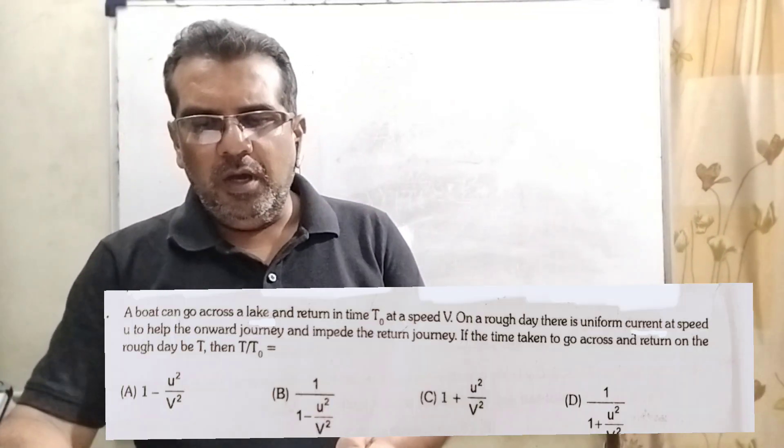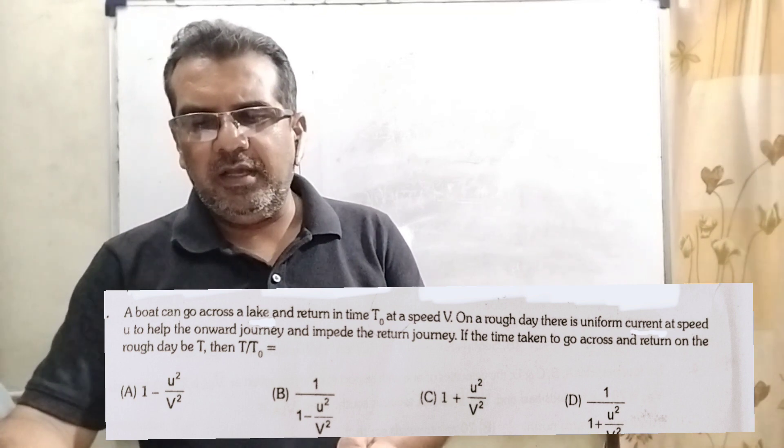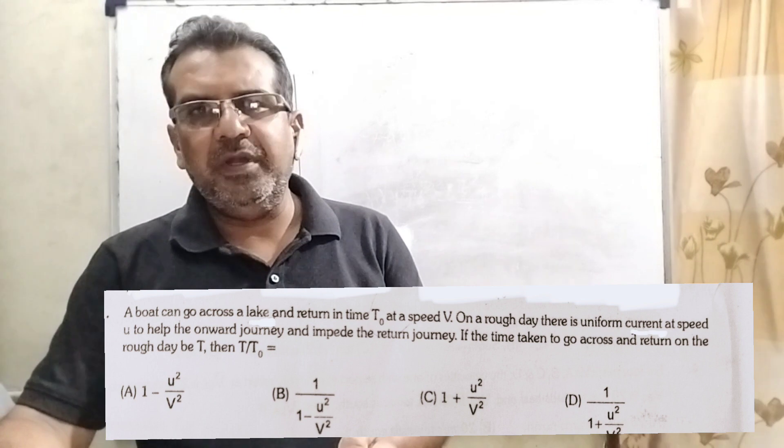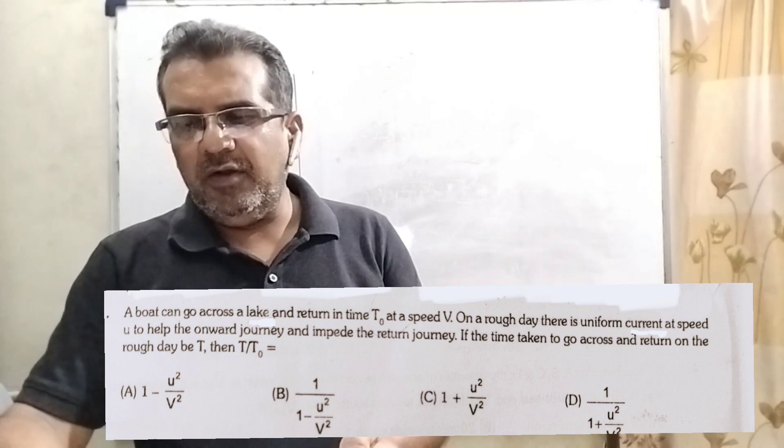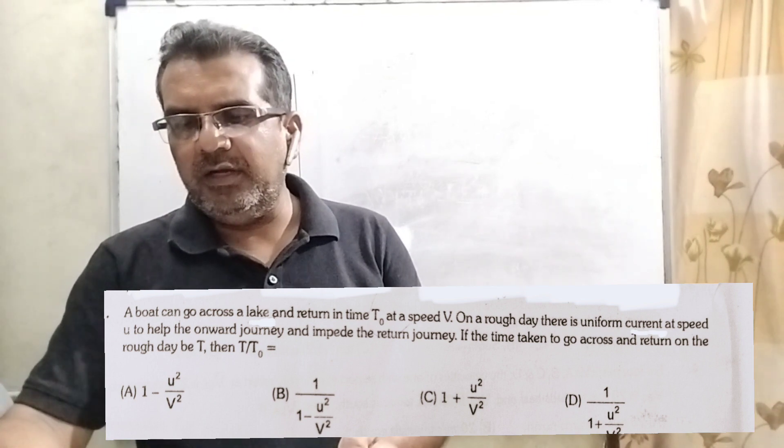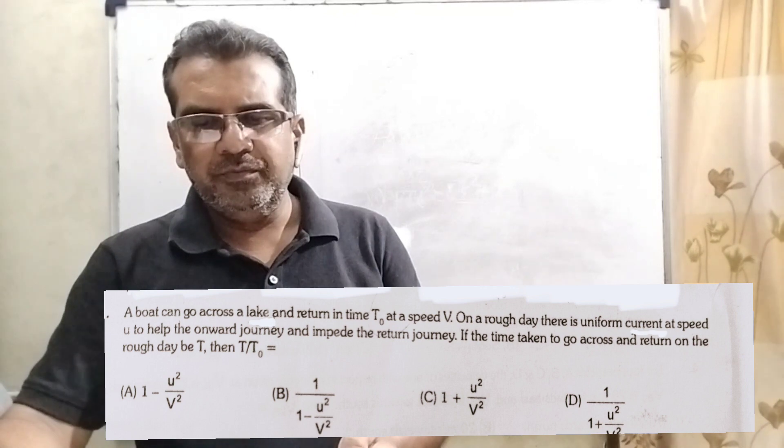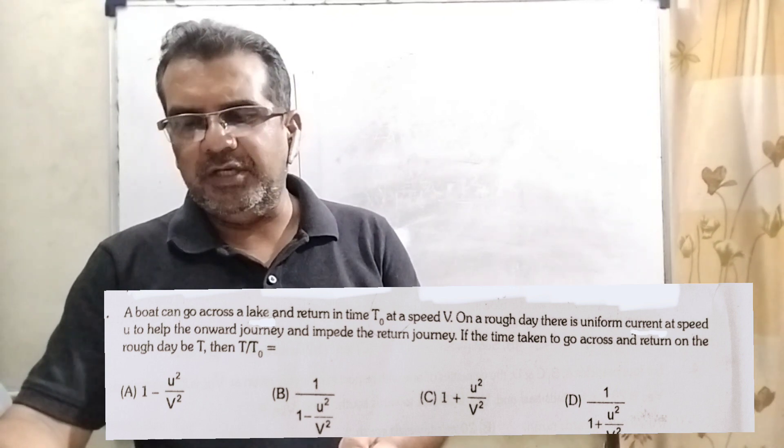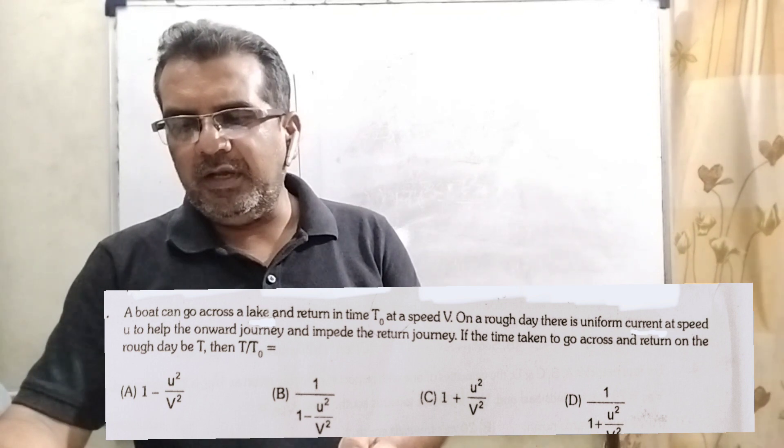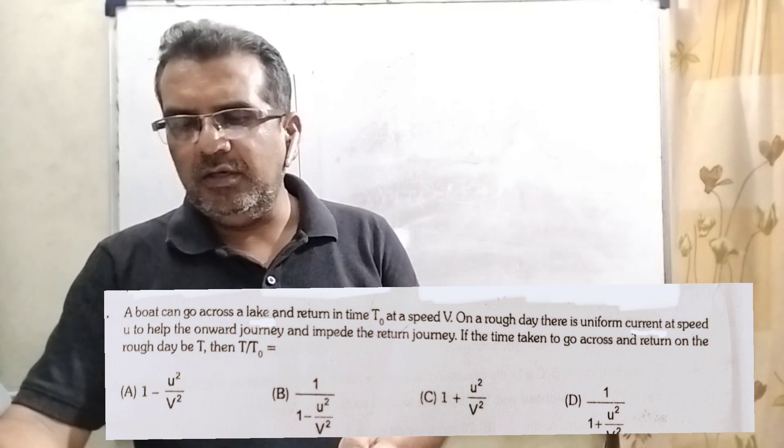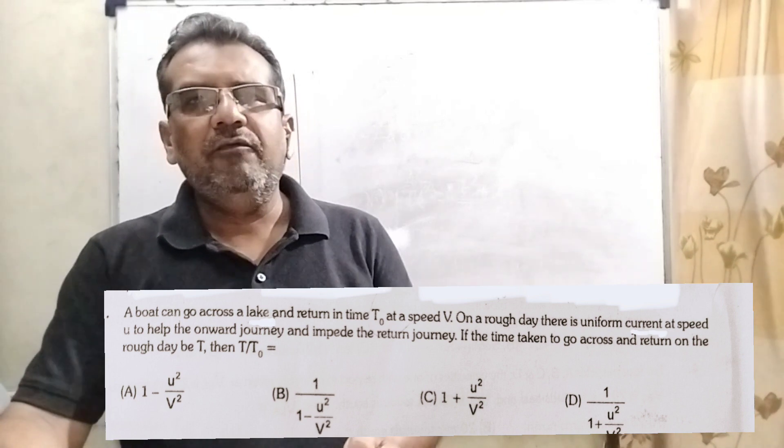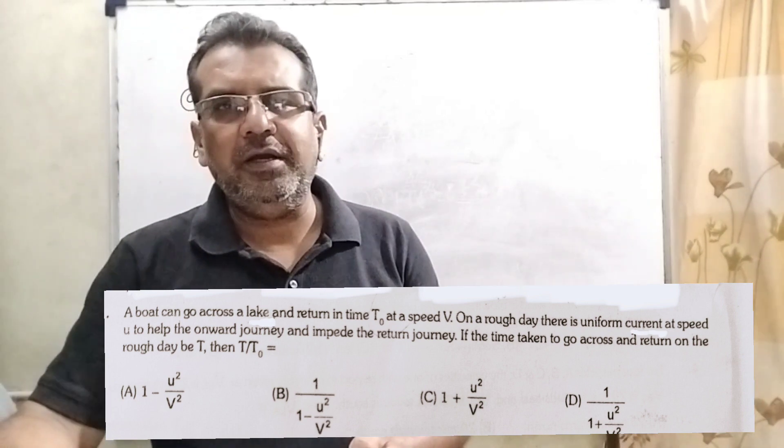Now here is the question. A boat can go across a lake and return in time T0 at a speed capital V. On a rough day, there is uniform current at speed small u to help the onward journey and impede the return journey. If the time taken to go across and return on the rough day be capital T, then find out the ratio capital T by T0.